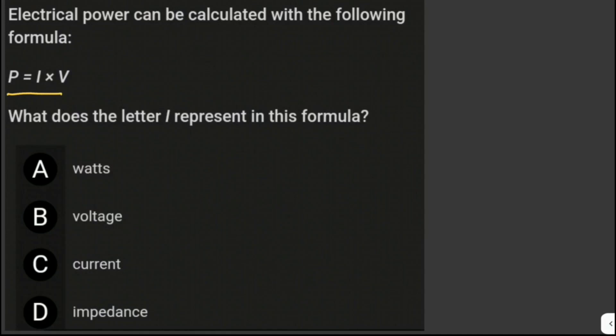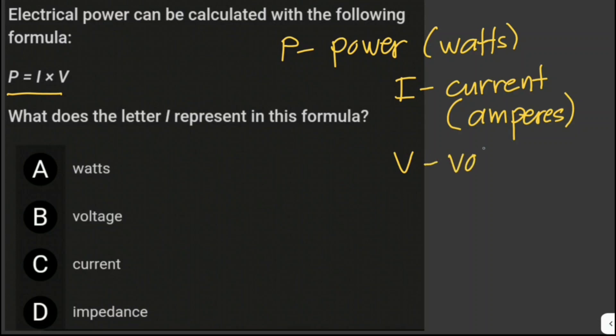From this formula, P equals I times V, letter P represents power, which is measured in watts, and then I represents current, which is measured in amperes, and letter V represents voltage, which is measured in volts. Therefore, letter I in this formula represents current, so our answer is letter C.